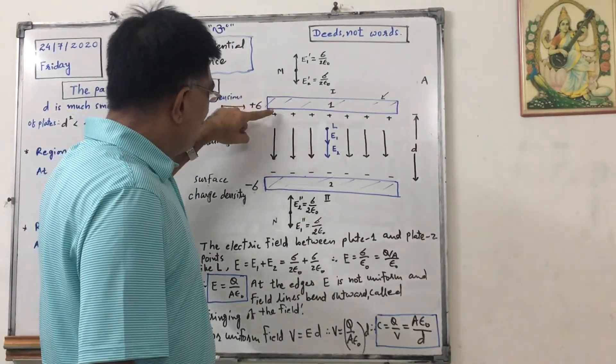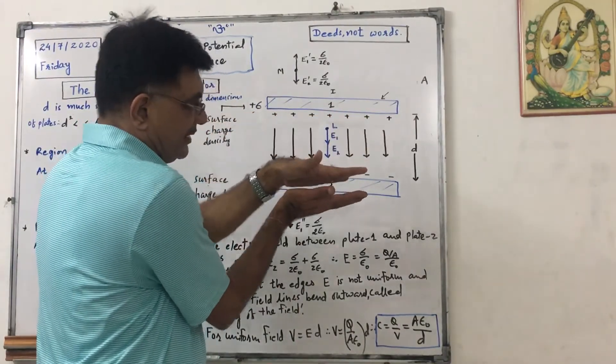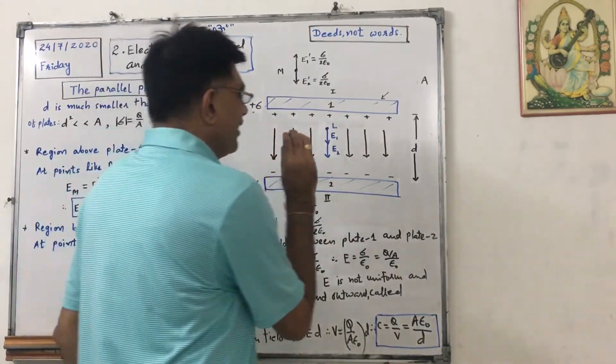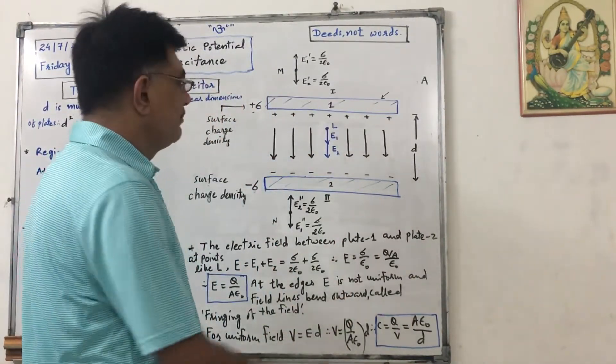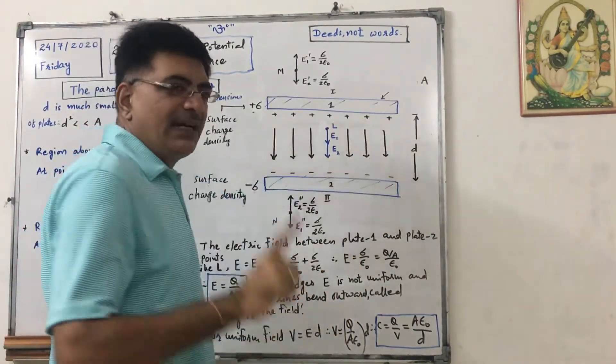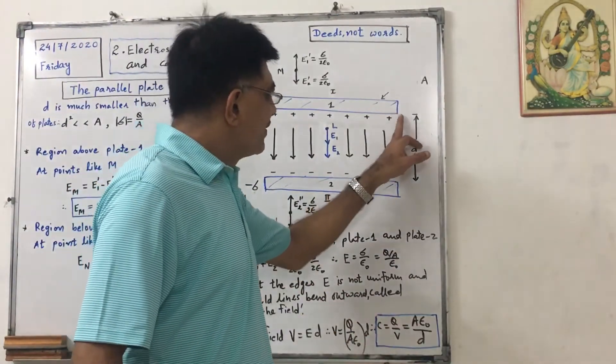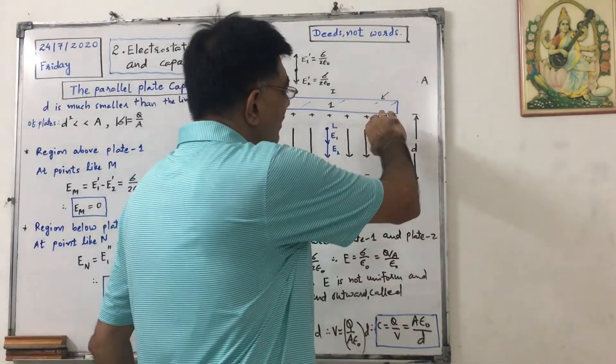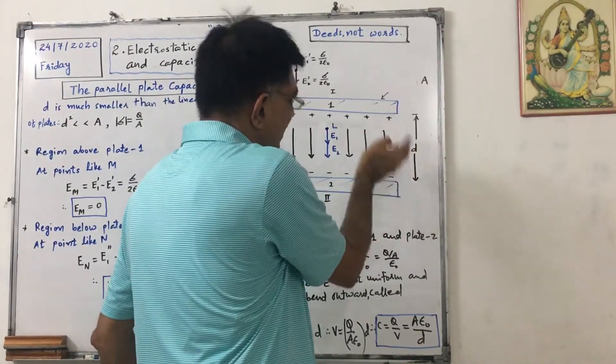Here electric field is uniform between two plates, but if we put any non-conducting or poor conducting medium, that is for dielectric medium between two plates, at that time the field won't remain uniform at the edges and it will become outward, it will bend outward like this.